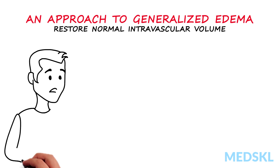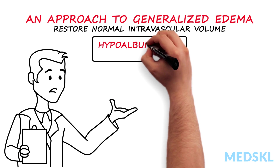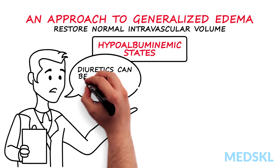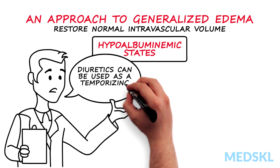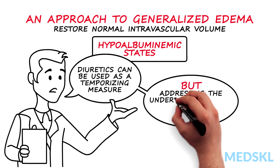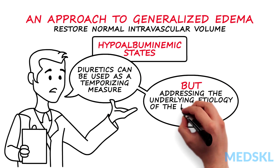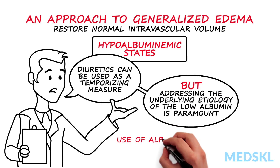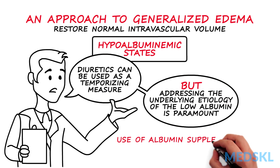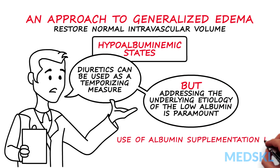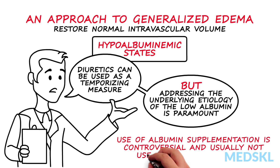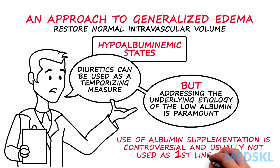Diuretics can also be used in hypoalbuminemic states as a temporizing measure, but addressing the underlying etiology of the low albumin is paramount. The use of albumin supplementation in hypoalbuminemic edematous states is controversial and usually not used as first-line therapy.